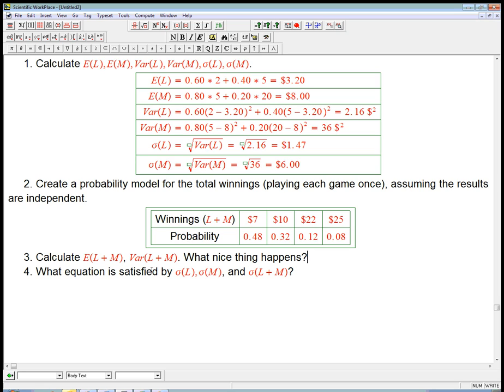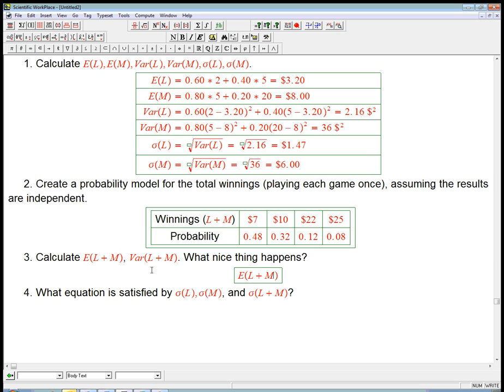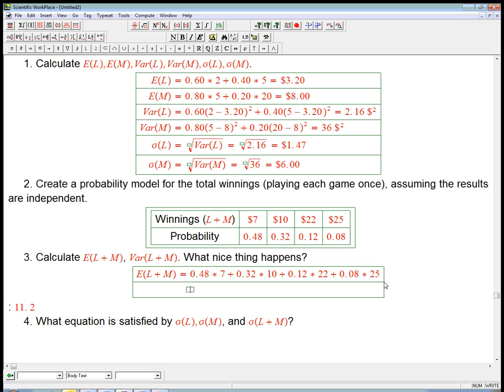So let's look at E, the expected value of L plus M. Well, I know the probability model for L plus M. So it's going to be 0.48 times $7, I'm not going to bother with the units in the middle of the calculation, plus 0.32 times $10, plus 0.12 times $22, plus 0.08 times $25. Let's just calculate that out. Let the computer do that. $11.20. Remember, an expected value is always just going to be in the regular units of whatever your random variable is.